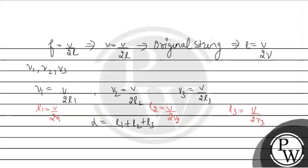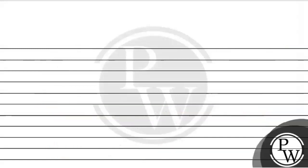So replacing these values in this equation we get V over 2ν equals V over 2ν1 plus V over 2ν2 plus V over 2ν3. Now V over 2 will cancel out, so we will get 1 upon ν equals 1 upon ν1 plus 1 upon ν2 plus 1 upon ν3. So this is your answer.